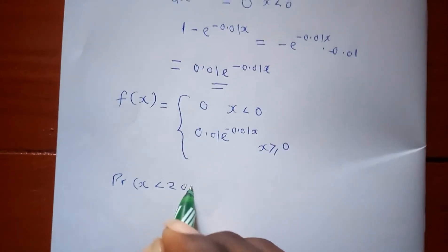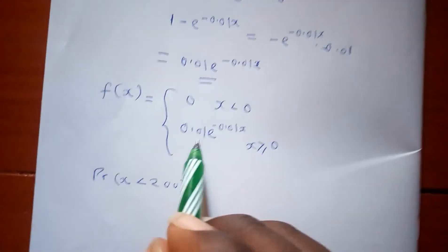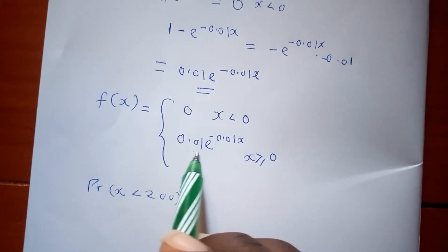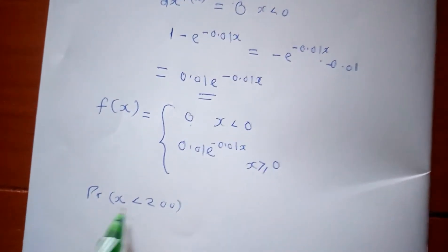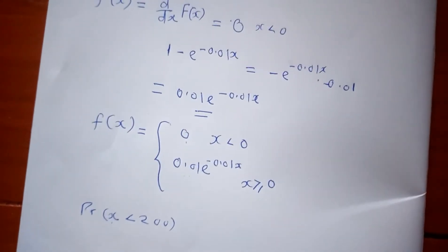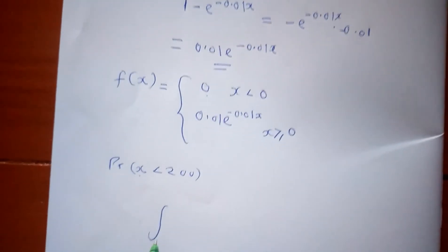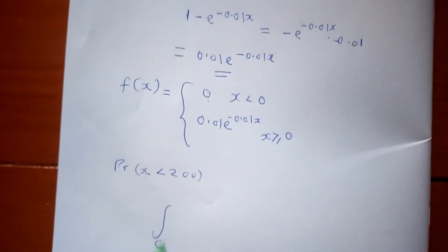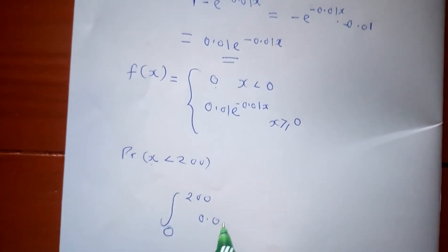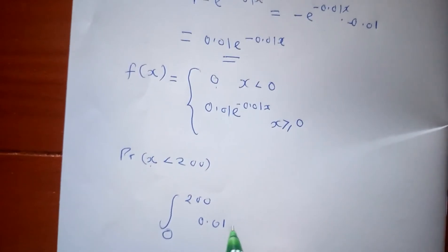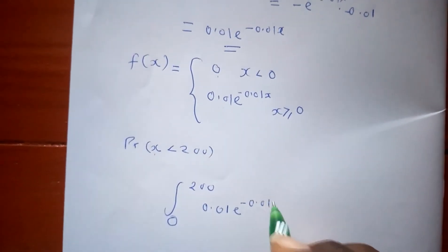To find P(x less than 200), we integrate f(x) from 0 to 200. So we integrate from 0 to 200 of 0.01 e to the negative 0.01x dx.